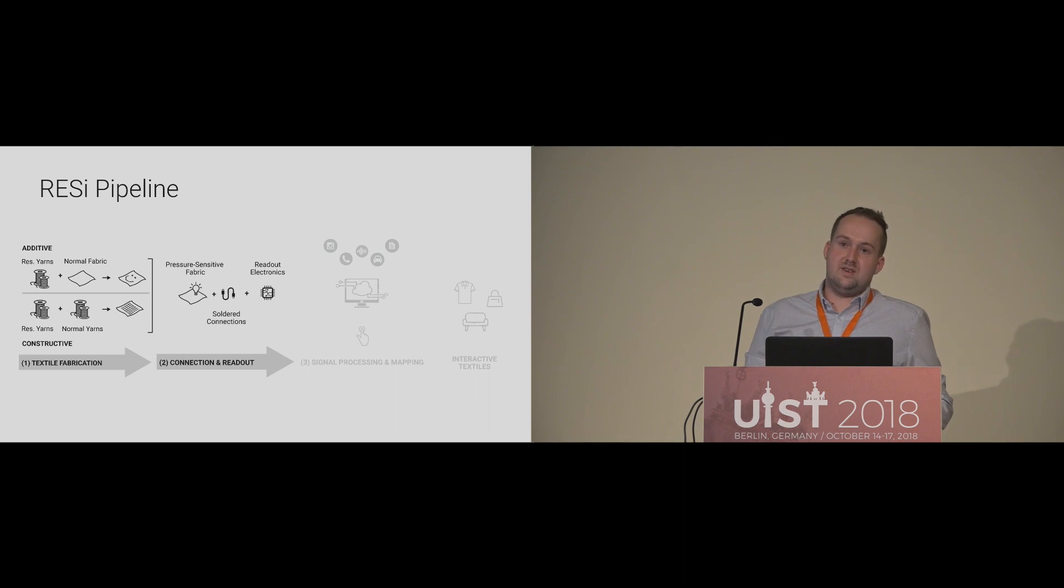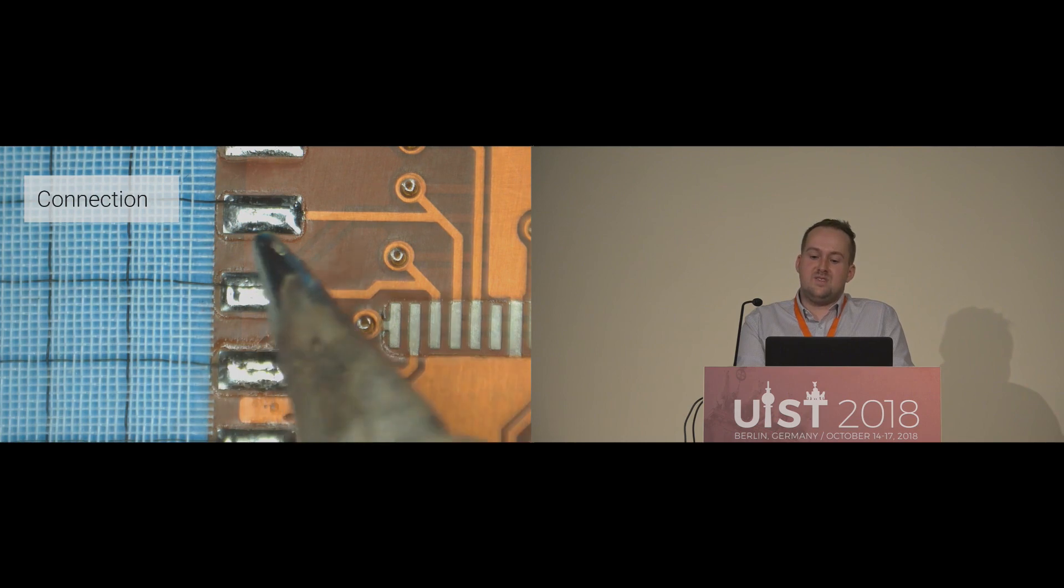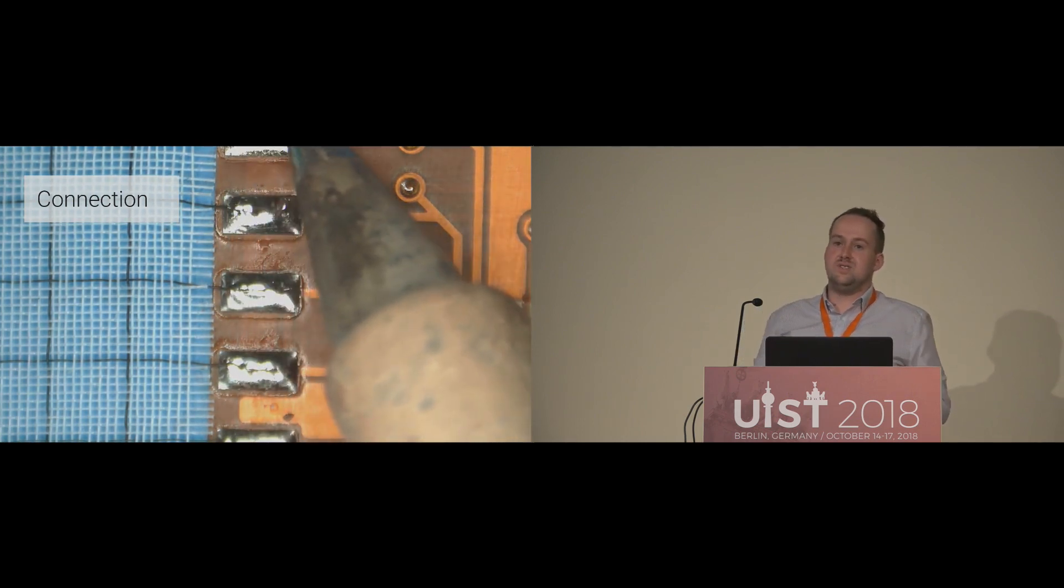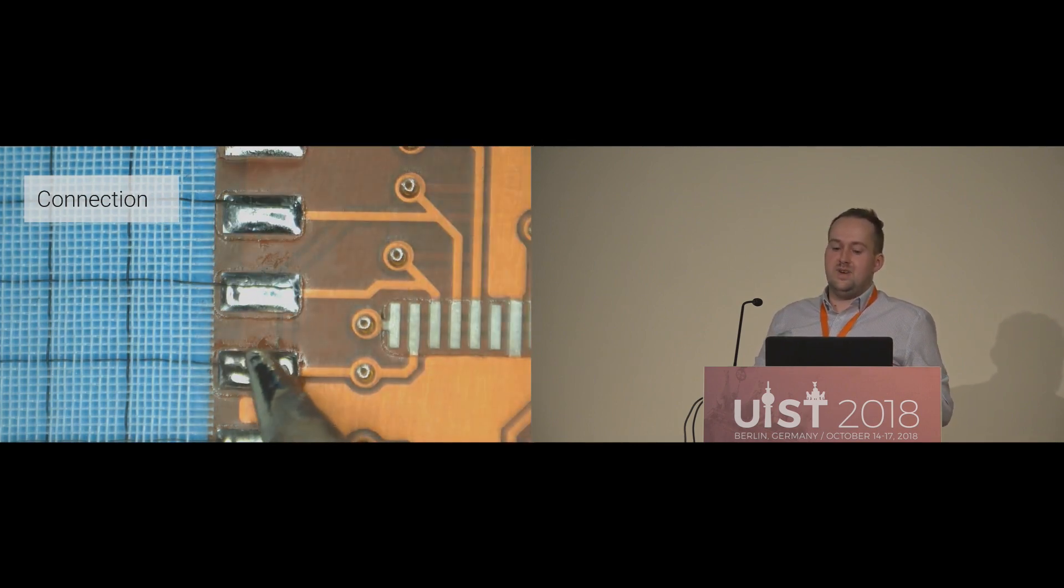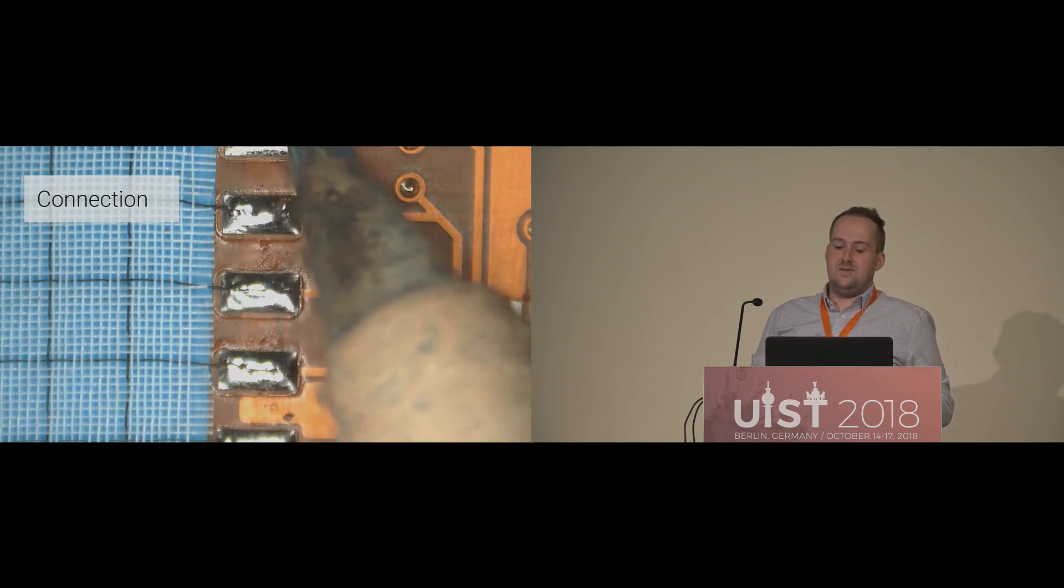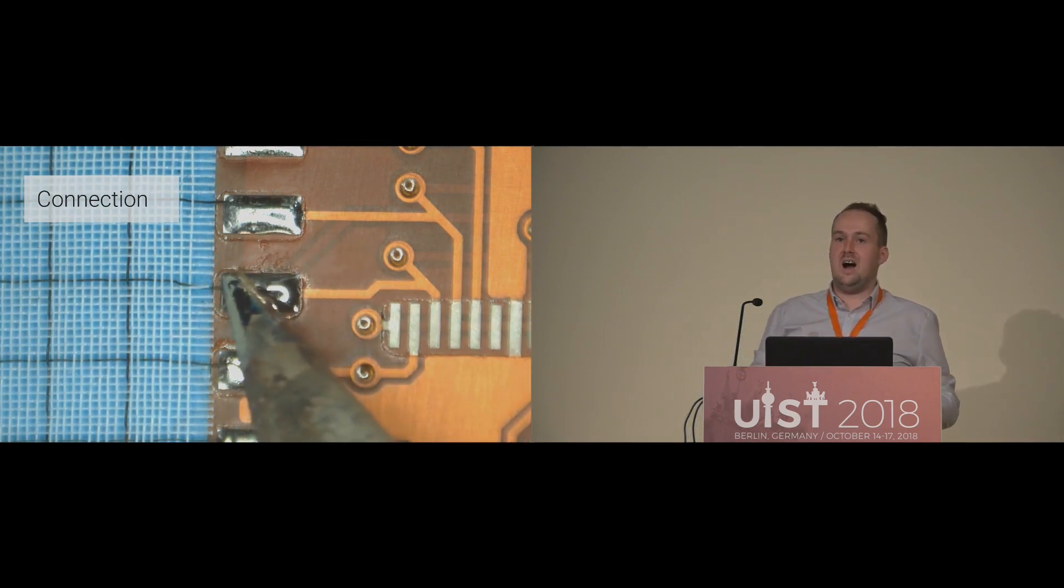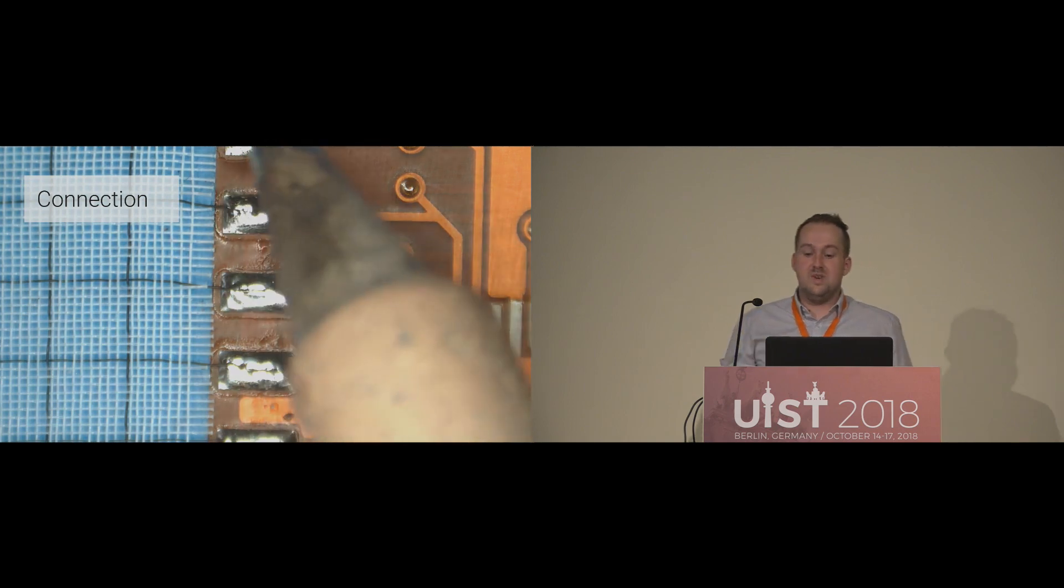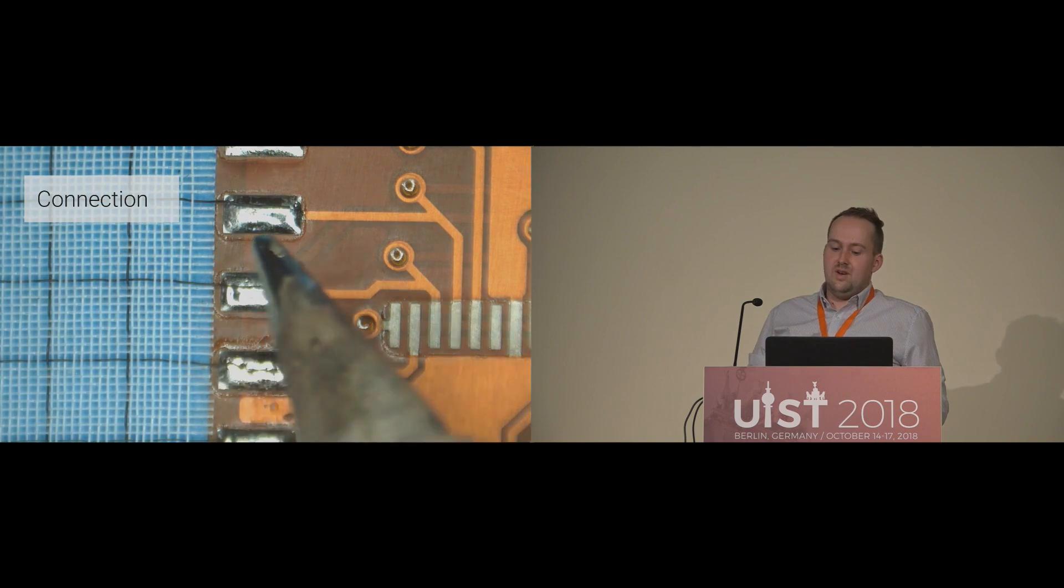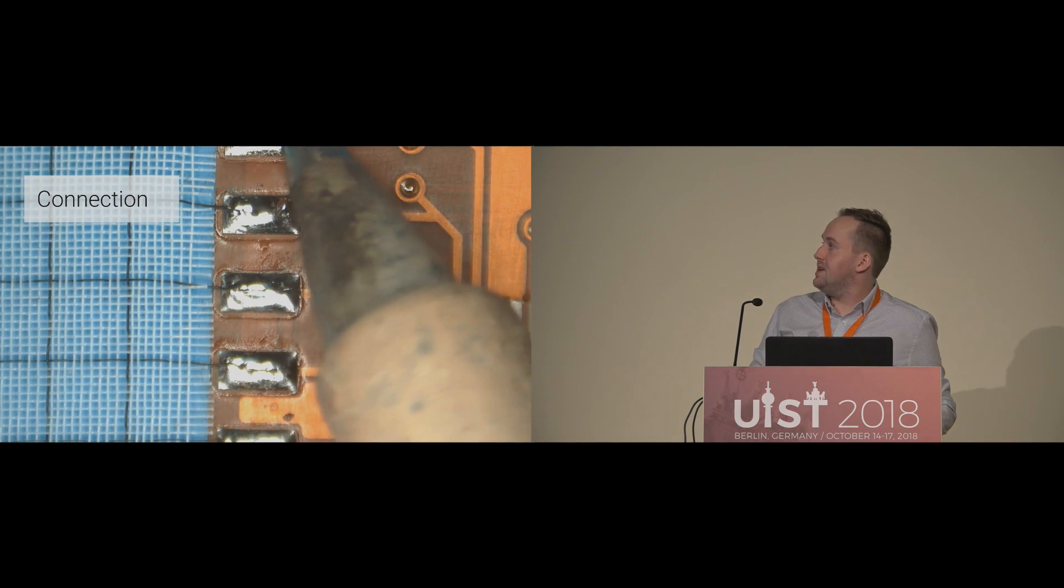Then the connection and the readout electronics. One major benefit of these yarns is that it solves the problematic of previous techniques to connect the textile with the driver electronics. Current methods use snap buttons, stitches, trims, and glue to connect driver electronics with the hardware. However, all of these connections struggle with the high amount of sensors at fine pitch. As mentioned before, our yarns have a metallic core and a resistive coating, and you can easily remove the coating with a soldering iron at the temperature of 350 degrees.